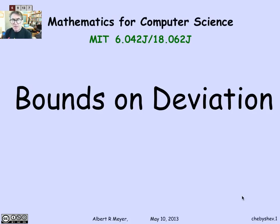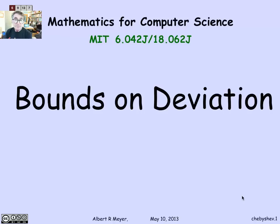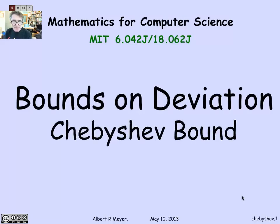The Markov bound gave you a coarse bound on the probability that R was overly large, using very little information about R. Not surprisingly, if you know a little bit more about the distribution of R than simply that it's non-negative, you can state tighter bounds. And this was noticed by a mathematician named Chebyshev, who has a bound called the Chebyshev bound.